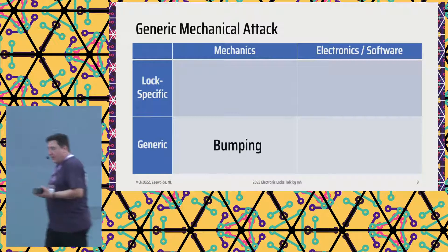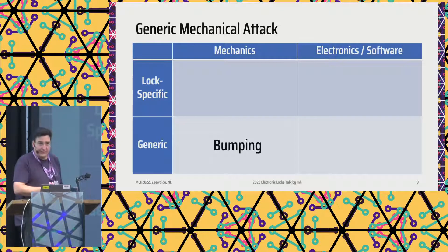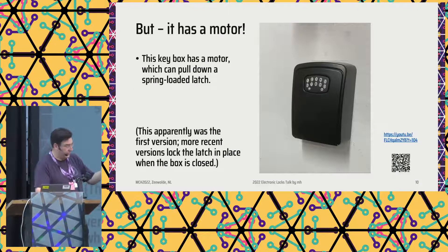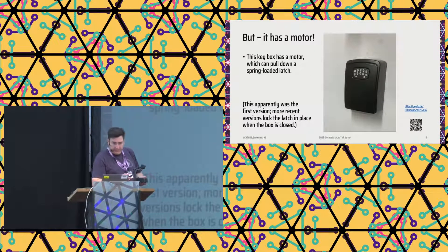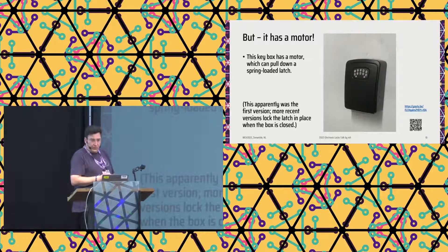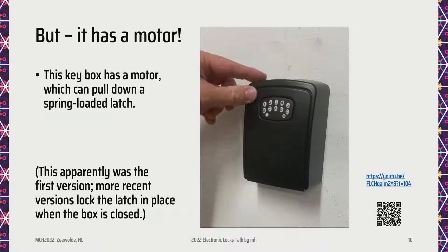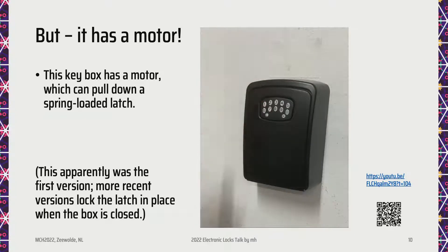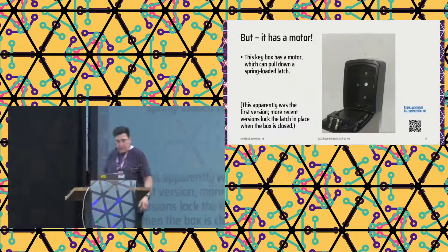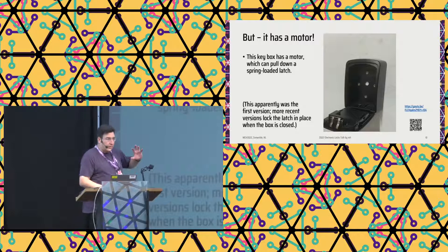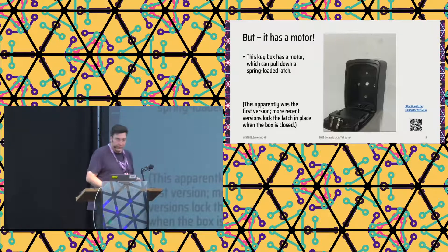Now, bumping. The solenoid is bad — let's use a proper motor. This little key safe, I have it here, actually does have a motor, and this motor pushes down on a spring-loaded latch. So it's convenient: you can close it and that latch will close. But you can also do the same thing as with the cheap safe. To be fair, the manufacturer has improved it. There is now a function where the motor turns the other way around when it senses a close, so this attack doesn't work on the new versions anymore. I like it when manufacturers actually improve the product.